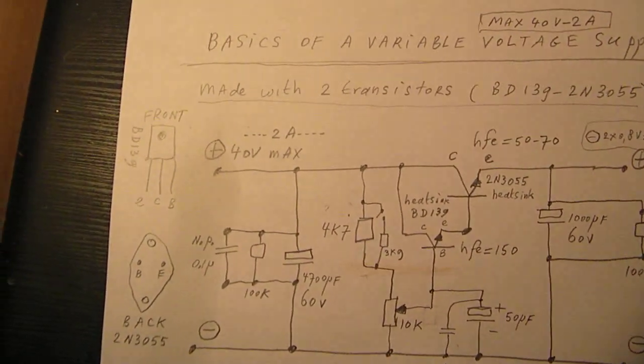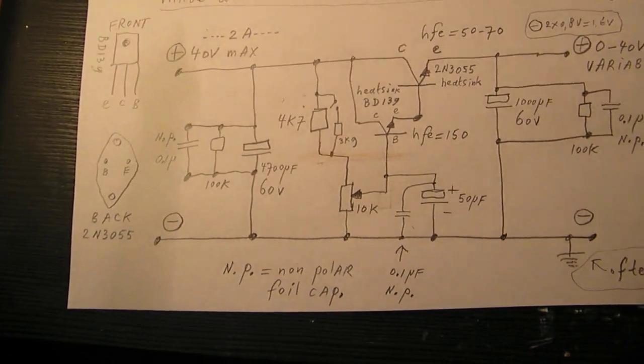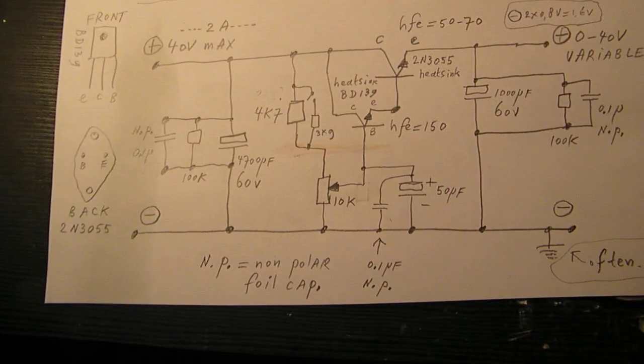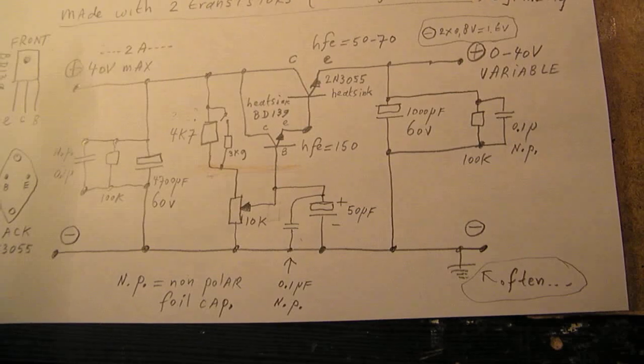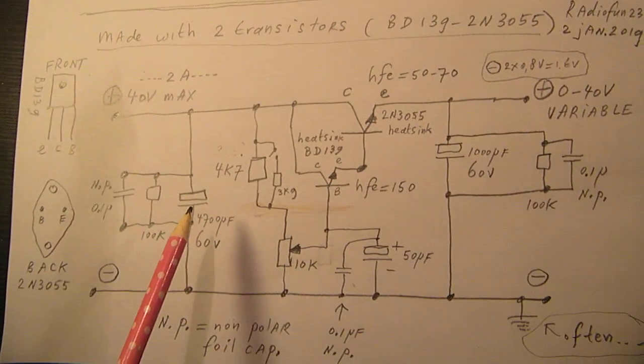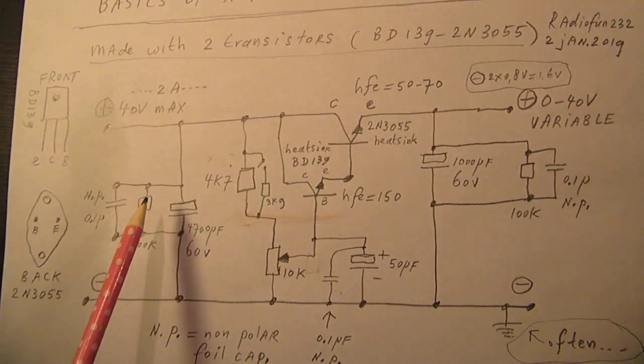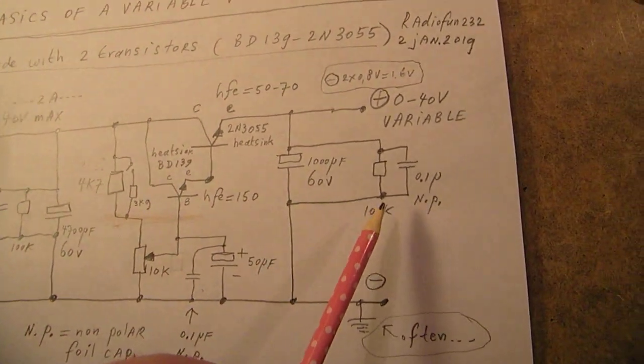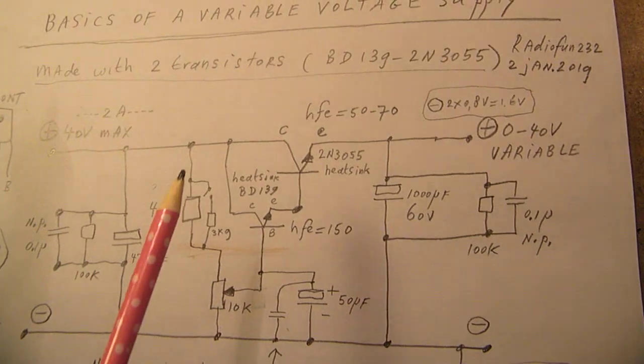For a Darlington with a 3055 and a BD139, the maximum is approximately 40 volts. I have told that earlier because of the power that this combination, this Darlington combination can take. A capacitor here, bridged with these two electronic components. I have explained that already.